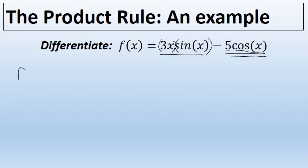Let's take the derivative. The sum and difference rule tells us that we can take the derivative of each term separately. Taking the derivative of the first term is going to require the product rule. In the first term, the first factor is 3x and the second factor is the sine of x. The product rule states that the derivative of a product is the first factor times the derivative of the second, plus the second factor times the derivative of the first.